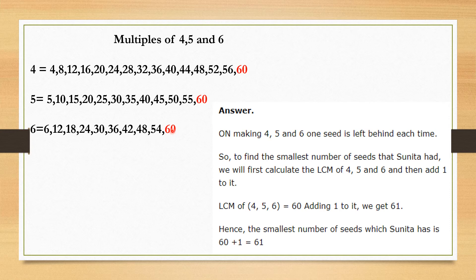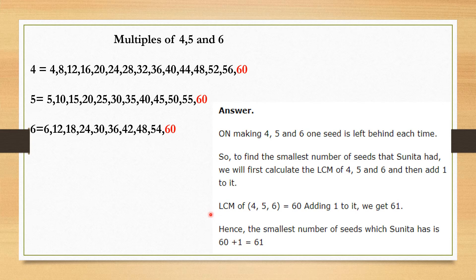This means she had 60 seeds? No — because after groups of 4, 5, and 6, one seed is left behind each time. So we add that 1 to the 60. LCM of 4, 5, 6 is 60, and adding 1 gives us 60 + 1 = 61. So the smallest number of seeds which Sunita has is 61 seeds.